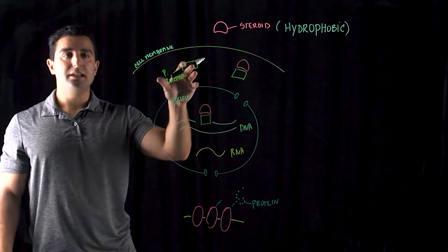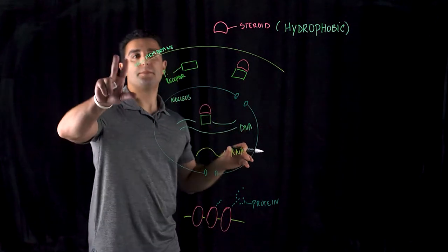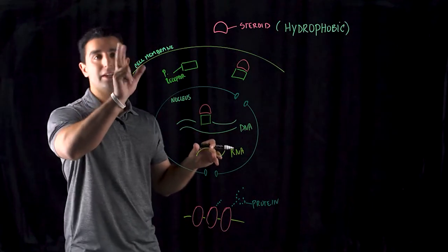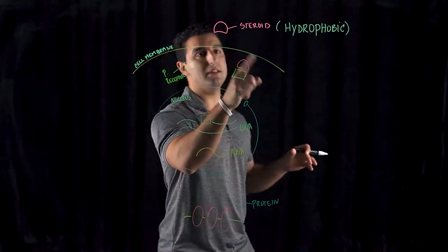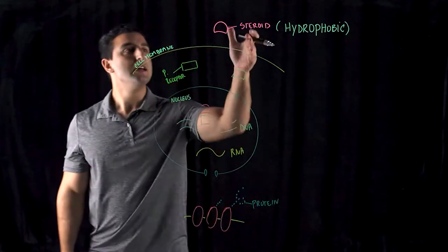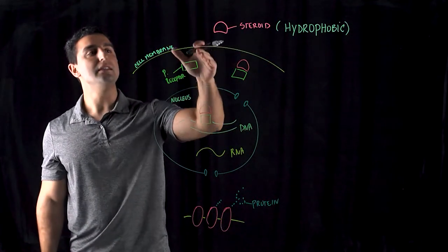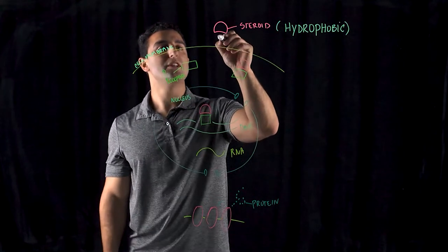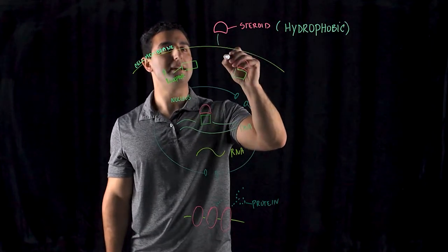And so unlike the proteins where a majority of the receptors are on the cell membrane because they cannot cross because of the physical properties of these proteins, steroids, on the other hand, can easily diffuse through the cell membrane. Because remember, cell membrane, what are they made of? It's made of fats.